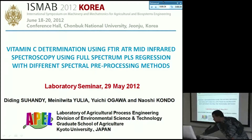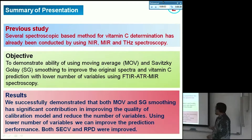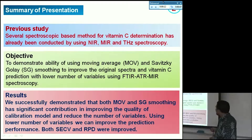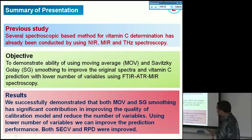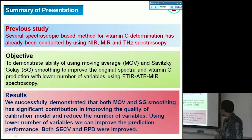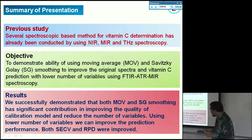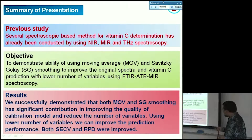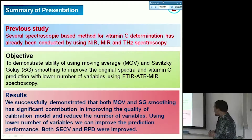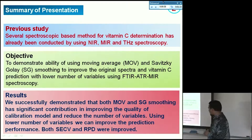I am a third-year PhD student. In the previous study, several spectroscopic-based methods for vitamin C determination have already been conducted using near-infrared, mid-infrared, and terahertz spectroscopy. The objective of the recent study is to demonstrate the ability of moving average and Savitzky-Golay smoothing to improve the original spectra and vitamin C prediction with a lower number of variables using FTIR-ATR mid-infrared spectroscopy. The result was very good.